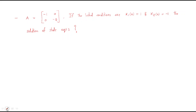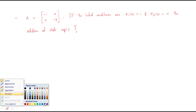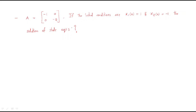Hello everyone. In this session we will discuss some more problems regarding state space analysis. The problem is: given matrix A equal to [[-1, 0], [0, -2]], with initial conditions x1(0) = 1 and x2(0) = -1, find the solution of the state equations.